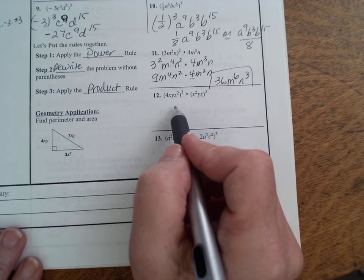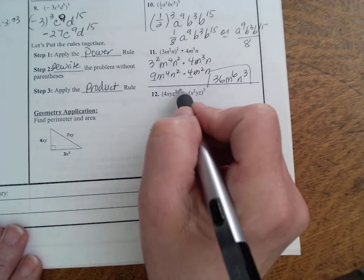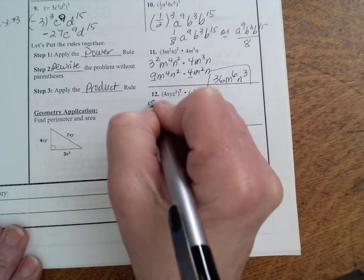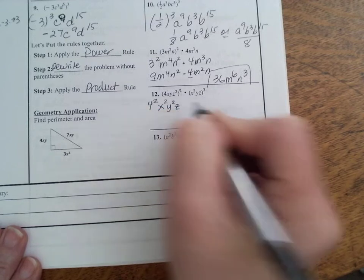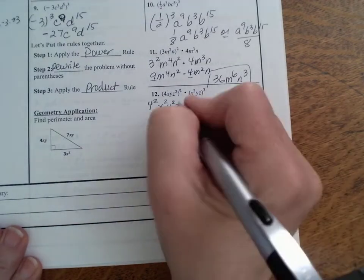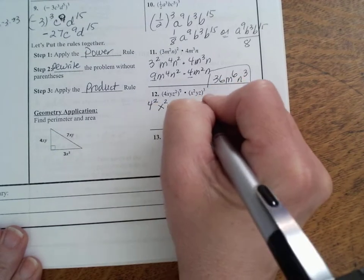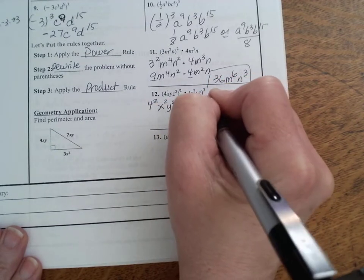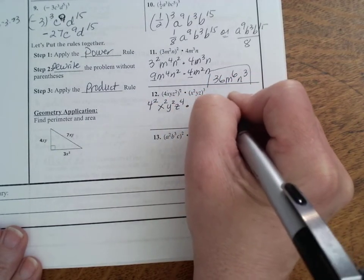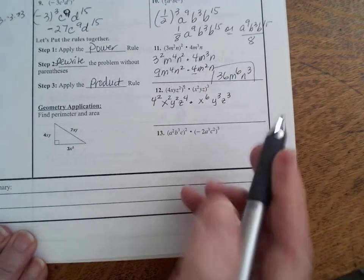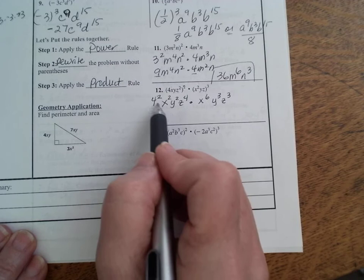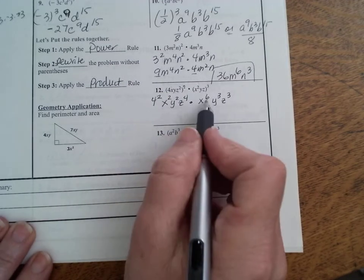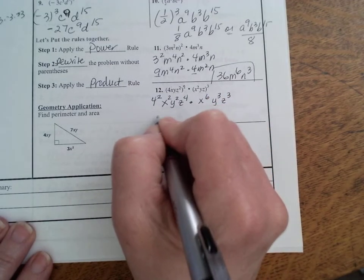All right, let's try this one. So again, power of a power. So you're saying 4 squared x squared y squared z to the fourth times x to the 6 y cubed z cubed. Power of a power, so simplify those first. Then if you want, go ahead and do 4 squared, which won't affect because this won't have any other numbers, but 16.